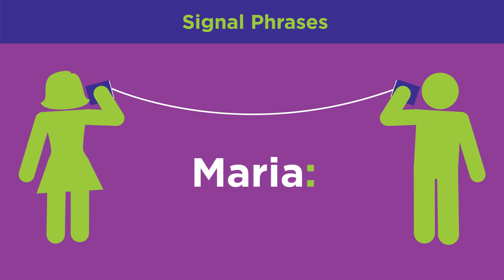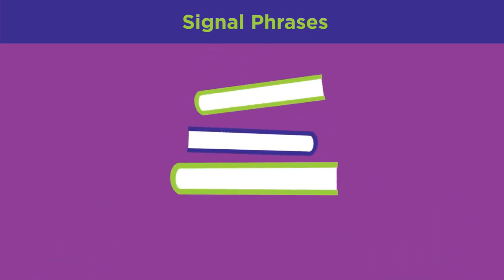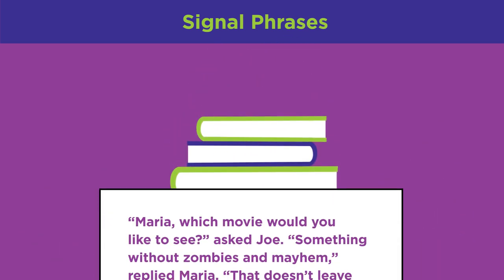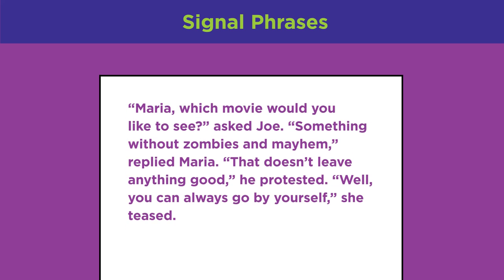When reading a play, a name followed by a colon tells the reader who is speaking. In novels, authors also use signal phrases to let readers know who is speaking or thinking. 'Which movie would you like to see?' asked Joe. 'Something without zombies and mayhem,' replied Maria. 'That doesn't leave anything good,' he protested. 'Well, you can always go by yourself,' she teased.